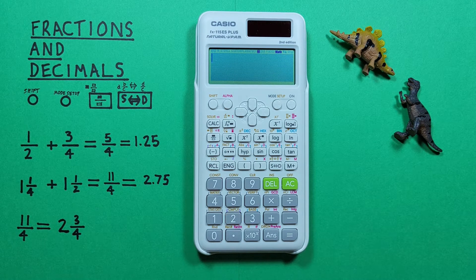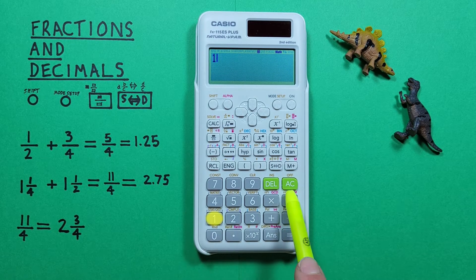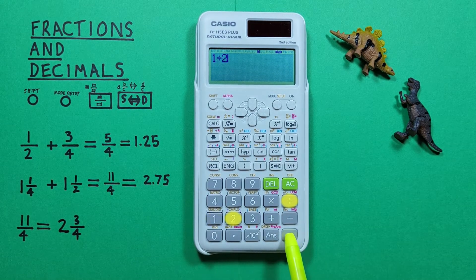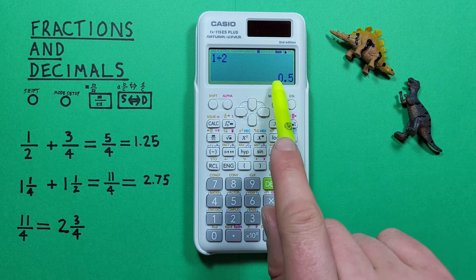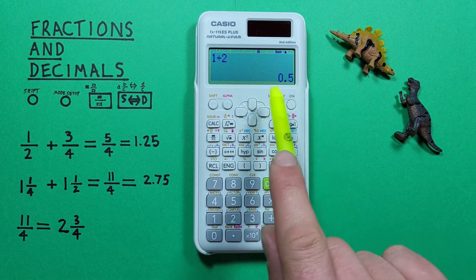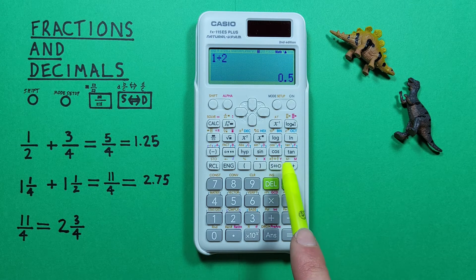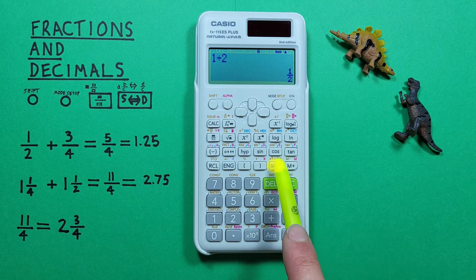We will press 2. And now if we do 1 divided by 2 and press equals, we see we get our result as a decimal automatically. And if we want that as a fraction, we can just hit the S to D key again to convert back and forth.